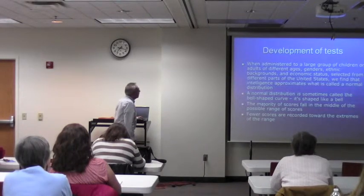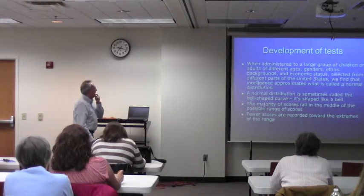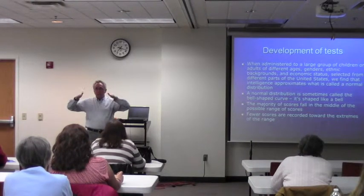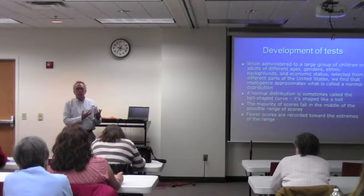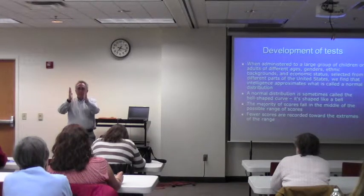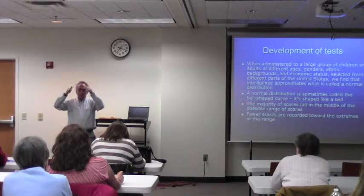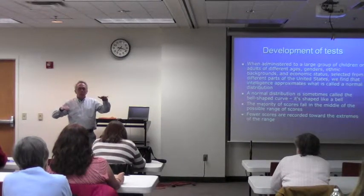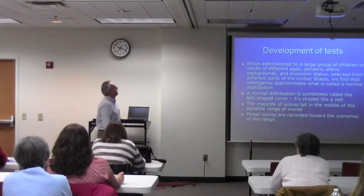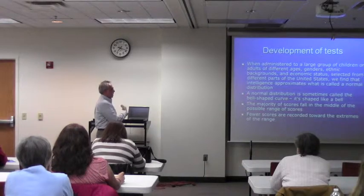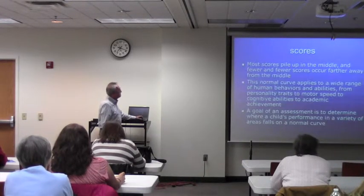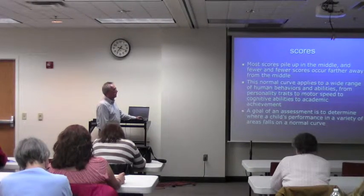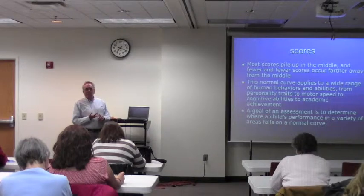Most scores — and intelligence approximates what is called a normal distribution — follow a bell-shaped curve, which represents how most people in the United States perform on these measures. The hump is large in the middle because most people are average, and it tapers out at the ends because not many people score really low or really high. This bell-shaped curve applies to a wide range of behaviors, even personality traits, and also applies to tests of behavioral and attention, which are all norm-referenced questionnaires.